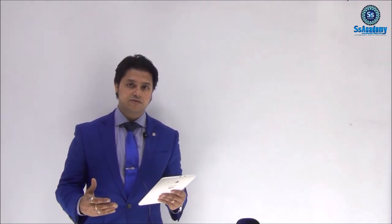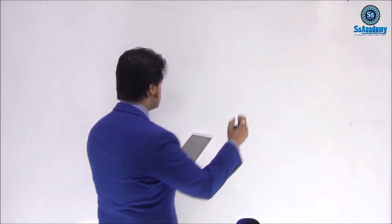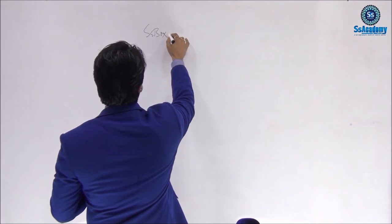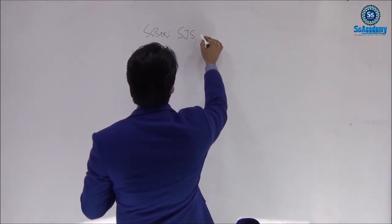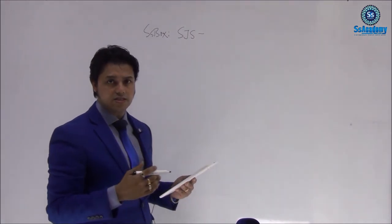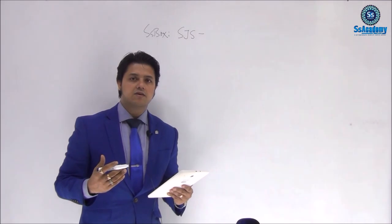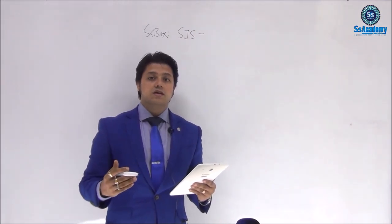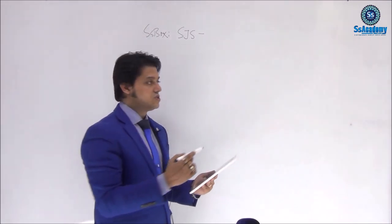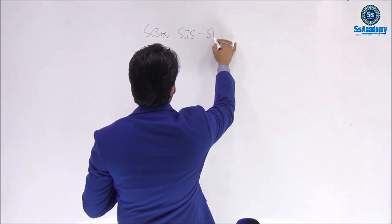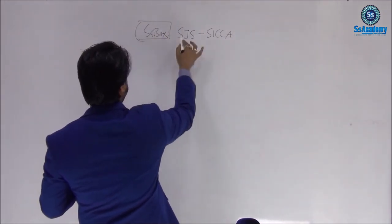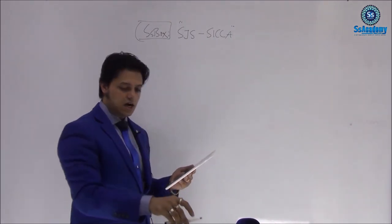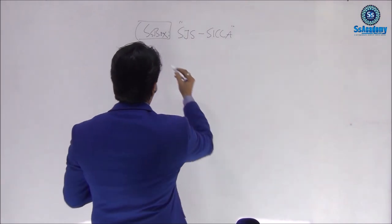Let's see how the SS box will be helpful to remember all of these things together. The SS box of Sjogren's syndrome — the most important part is keratoconjunctivitis sicca, meaning dry eyes and dry mouth. Our mnemonic is SJS CICA, which will help you remember all the features.